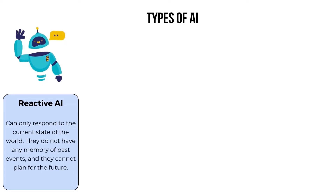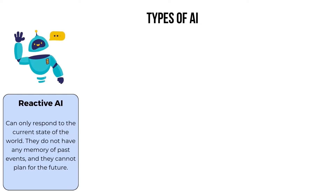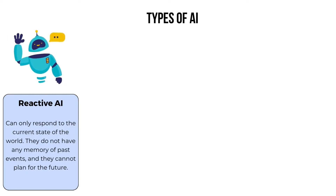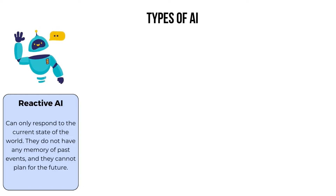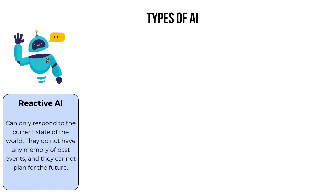Reactive AI systems can only respond to the current state of the world. They do not have any memory of past events, and they cannot plan for the future.